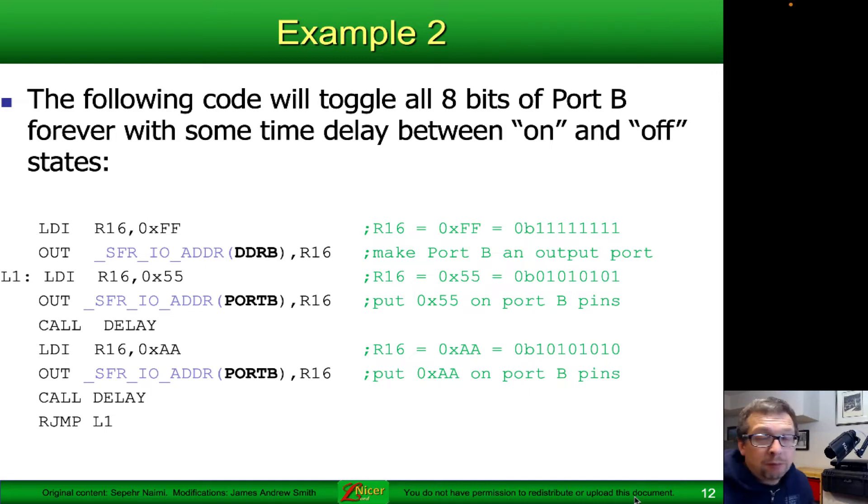Then we call the delay for whatever amount of time that is. When we come back from the delay, we're going to load immediately into R16 the value that is the opposite of what we had before. Instead of 01010101, we're going to put 10101010 into it, that's what the 0xAA means. Then we take that value, copy it into port B using the SFR_IO_ADDR macro through the out command, and call delay again. At this stage all of the pins have now changed. The ones that were off are now on and the ones that were on are now off. Then we jump back to that label so that we load the opposite set of values and so on.